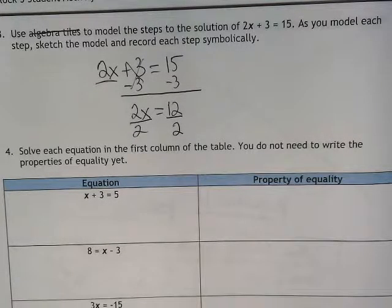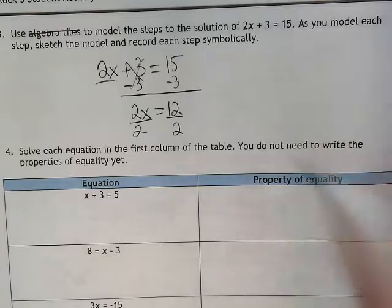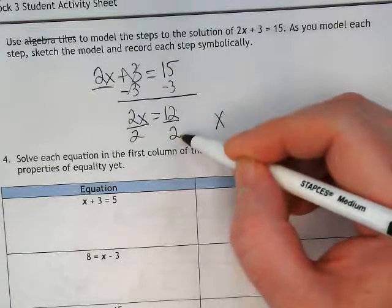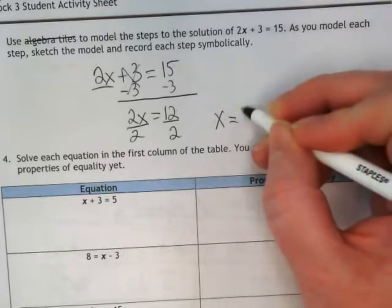2 divided by 2 is an invisible 1, so our x stays positive x. 12 divided by 2 is? 6.